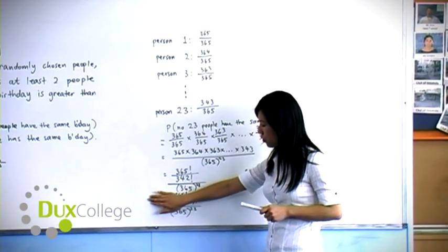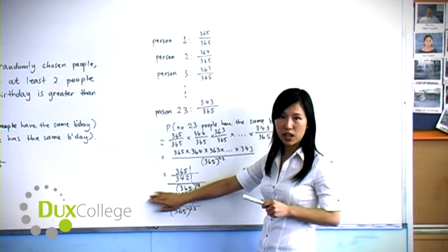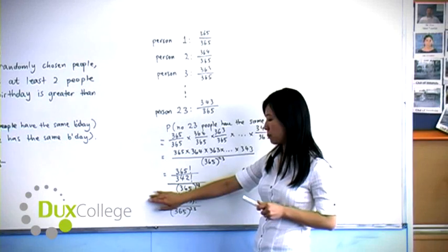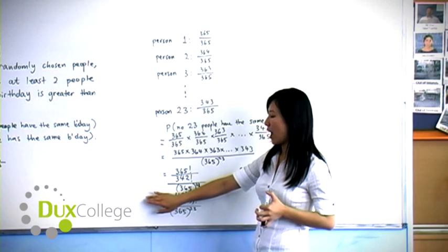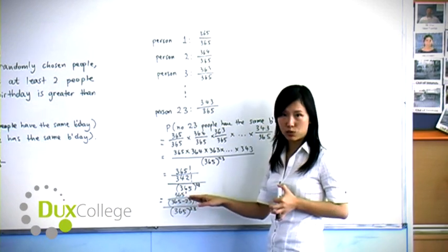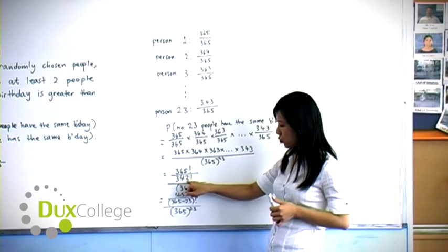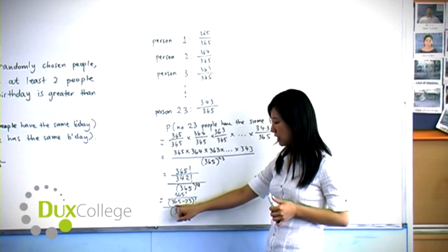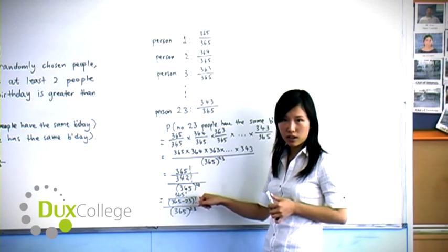If you evaluate this number on your calculator, it will return a math error because the memory in our calculator is not big enough. So we need to use algebra to simplify this expression further. Now 342 can be broken down into 365 minus 23 factorial.